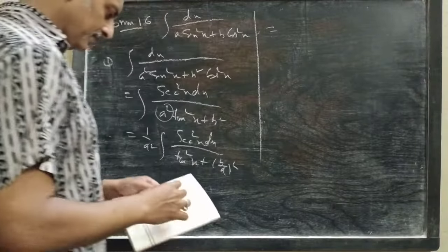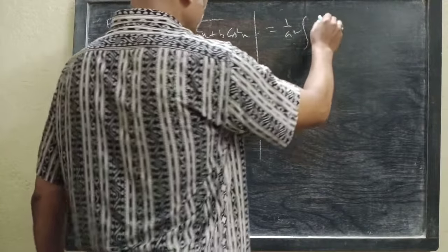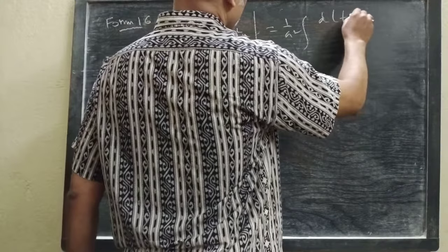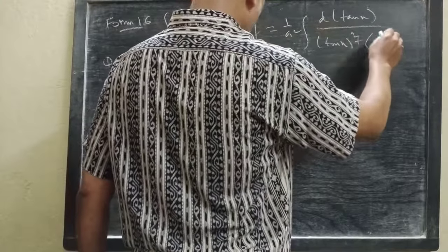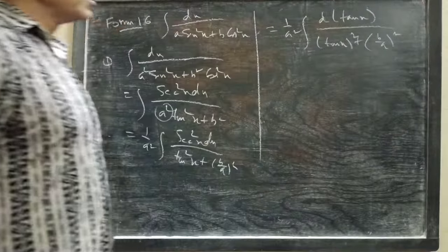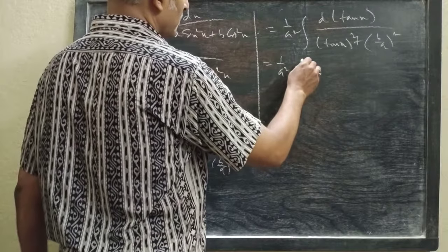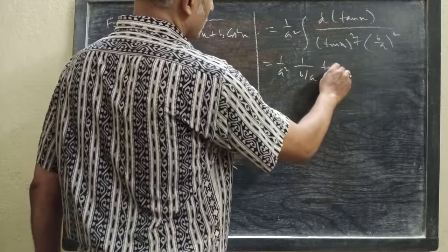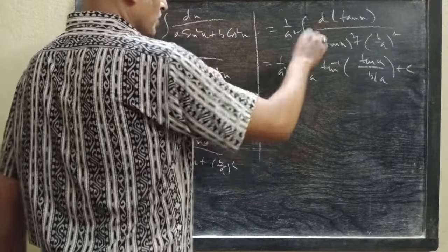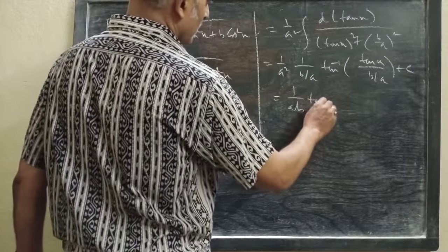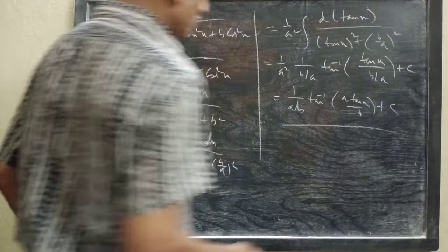Now we can write it as 1/a² times d(tan x) by (tan x)² + (b/a)². This is in the form dz/(z² + s²), so we use the tan inverse form, giving 1/s. That is 1/(b/a), so the final answer is (1/ab)·tan⁻¹(a·tan x / b) + c.